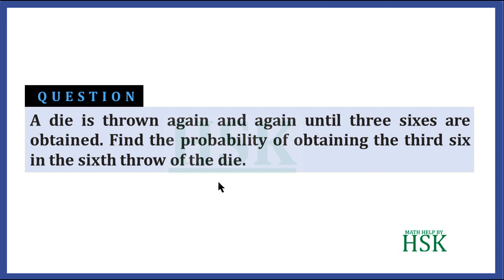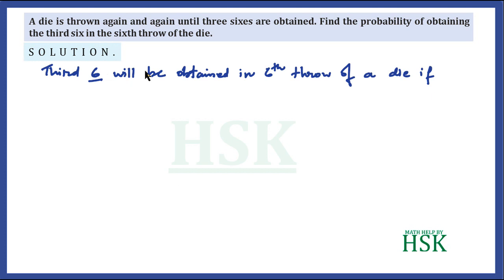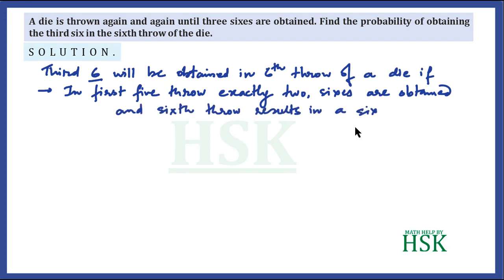We have to find the probability of obtaining the third six in the sixth throw of a die. When we throw a die for the sixth time, what is the probability that it gives a third six? The third six would be obtained in the sixth throw if, in the first five throws, exactly two sixes are obtained, and the sixth throw also results in a six.